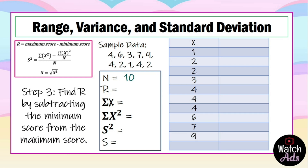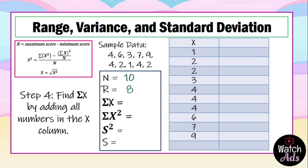Step 3: find R by subtracting the minimum score from the maximum score. Our maximum score is 9 and our minimum score is 1, so 9 − 1 = 8. That is our range. Step 4: find the summation of x by adding all numbers in the x column: 1 + 2 + 2 + 3 + 4 + 4 + 4 + 6 + 7 + 9. The summation of x equals 42.